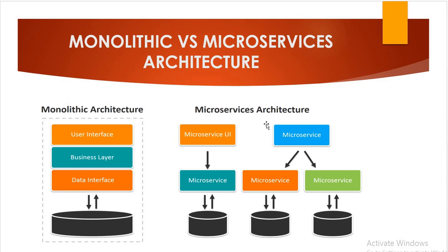In microservices all services are loosely coupled, so changes in one do not affect others. In monolithic architecture it is tightly coupled, and changes in one module affect other modules. For data management, microservices use federated data allowing each service to adopt the best data model for its needs, while monolithic uses a single centralized database. Microservices also allow small, focused teams working in parallel for faster deployment, whereas monolithic architecture requires large teams and considerable team management effort.